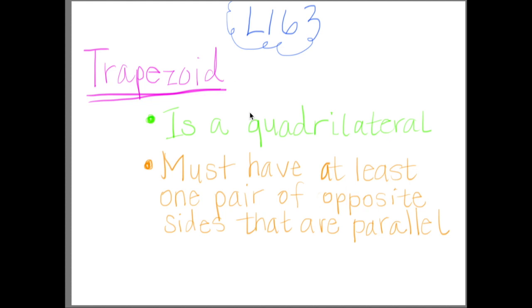Lesson 16 covers trapezoids, and we are going to define them very specifically. This is really the college-level definition of trapezoids. Just know there is a slight variety of definitions out there in the world, but this is the definition we use in Eureka, because Eureka is Common Core aligned, and Common Core is about preparing you for college. College is a few years away yet, but you'll tuck this definition in your pocket and come back to it in middle school, high school, and college.